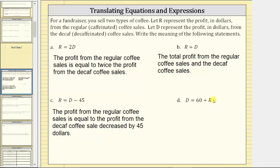We could also express 60 plus R as a sum. Let's go ahead and state the meaning as the profit from the decaf coffee sales is equal to $60 increased by the profit from the regular coffee sales.